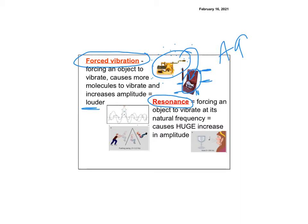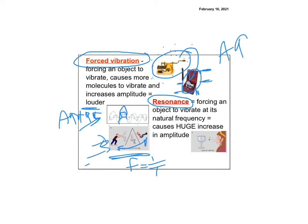Resonance is forcing an object to vibrate at its natural frequency. When you match that frequency, the amplitude gets much much higher. A swing is a good example — the girl swings back and forth at some natural frequency, which is equal to one over T depending on the length of the string. If the boy pushing her matches that frequency and hits every time she comes back, her amplitude gets much higher and she swings really high.